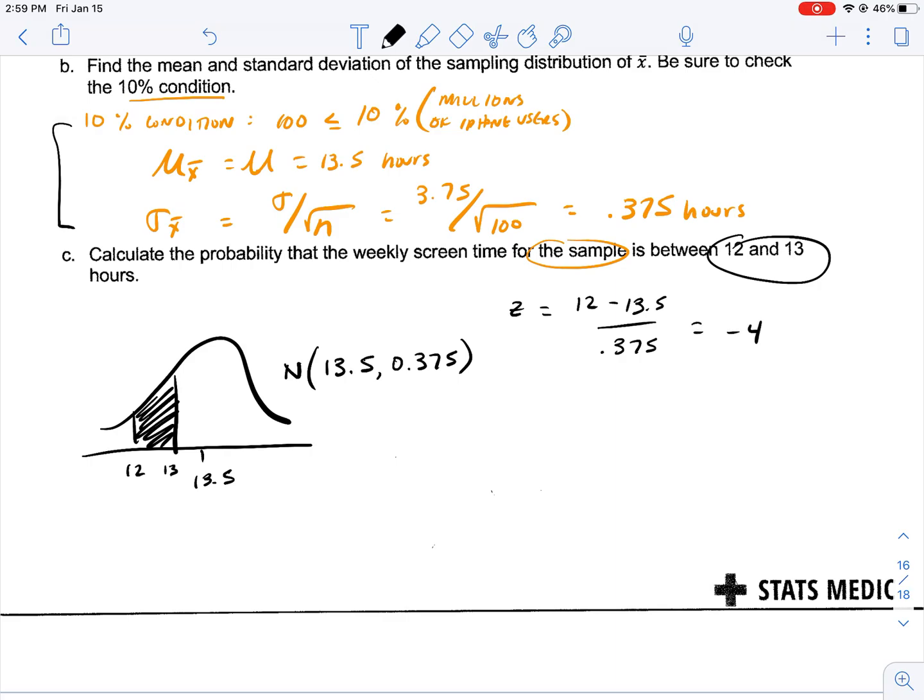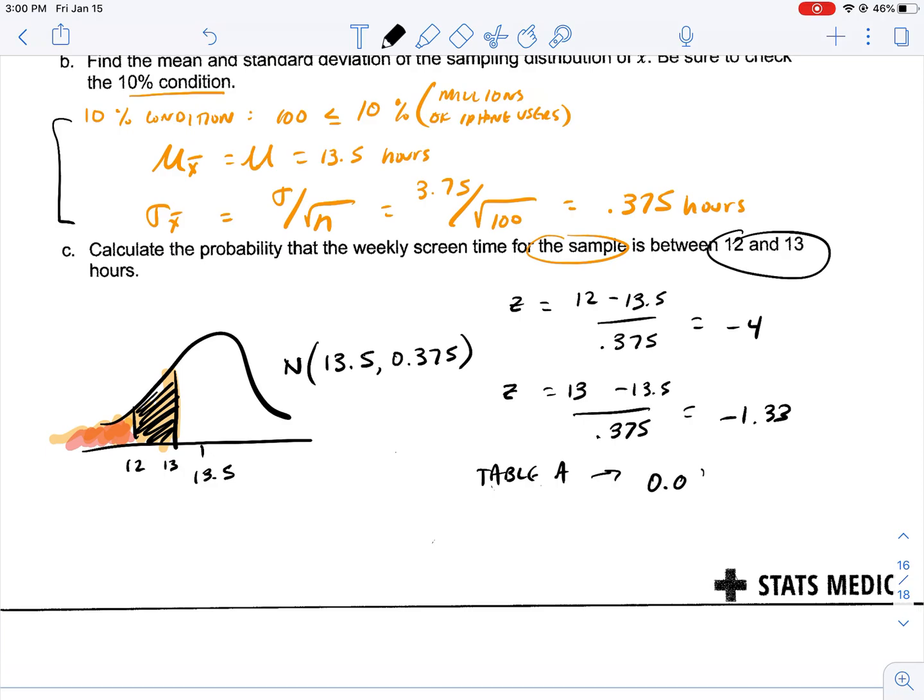And our z-score for 13 is going to be, divided by 0.375, negative 1.33. And by table A, we would subtract the area under 12 from the area under 13. And that would give us 0.0918 minus 0, because once we get down to four standard deviations, there's relatively nothing down there. And that's going to be equal to 0.0918.